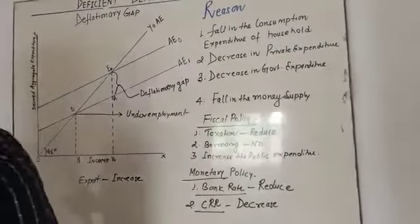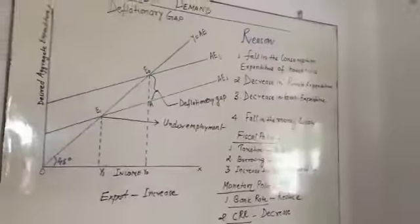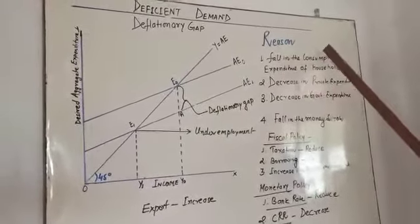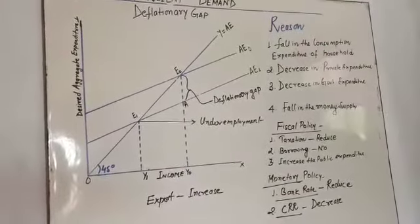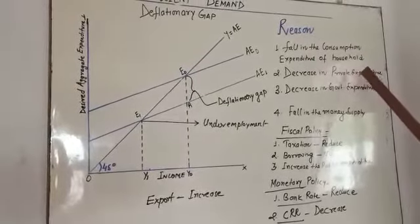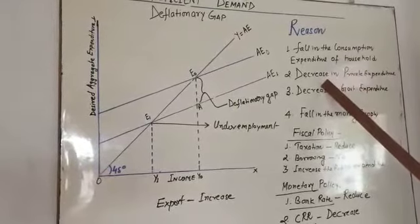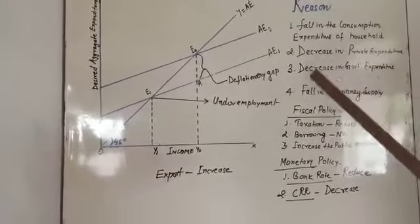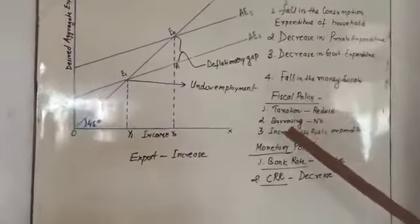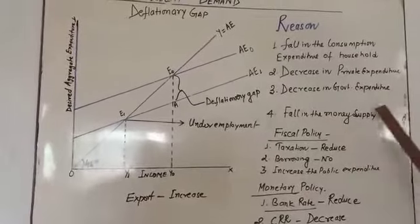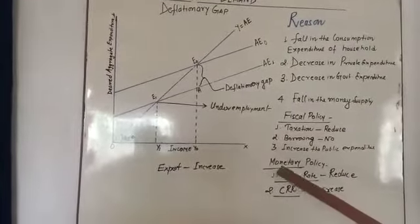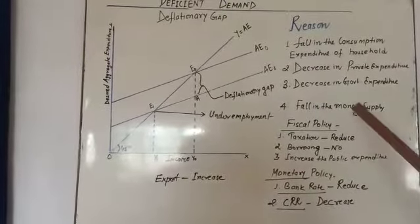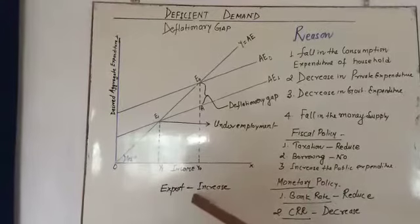Let me explain this topic again. What are the reasons for deficit demand? Deficiency gap is also called excess supply. Whenever it occurs, it is due to the fall in consumption expenditure, the private expenditure — meaning firms and industries are not going to invest because supply is more than consumption. Government expenditure decreases because taxes are not matched. The money supply is reduced, meaning money is not adequate in the economy, so people are not able to buy all goods and services.